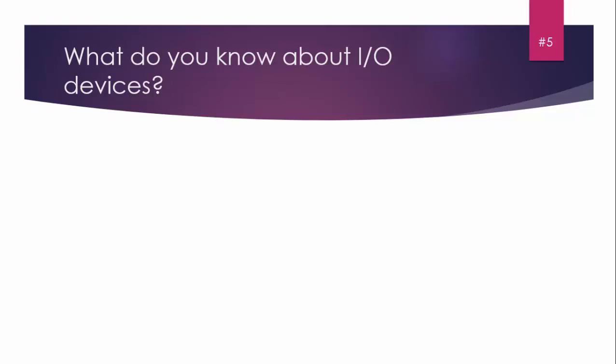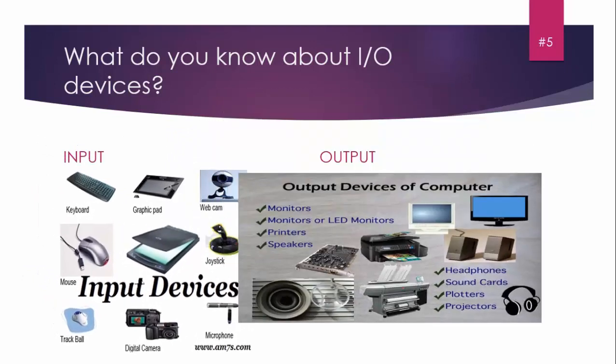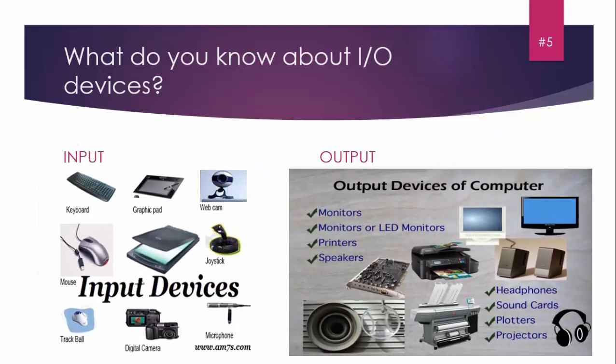Question number five: What do you know about I/O devices? Input-output devices - these are all input devices, these are all output devices. You'll first define input: Input is a process where something is given to the computer such as data or instructions. Output is something given by the computer. You'll write output device names and examples.